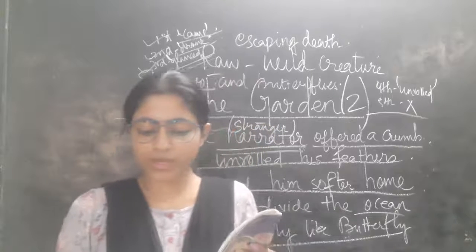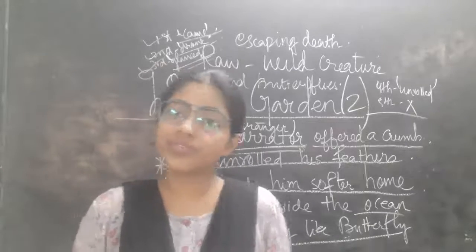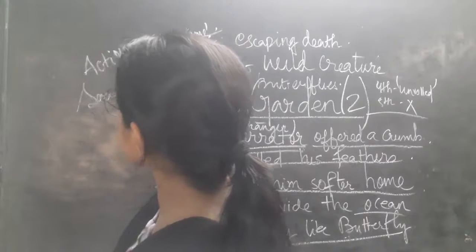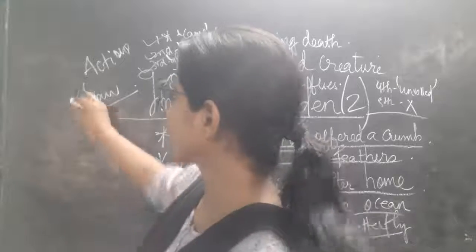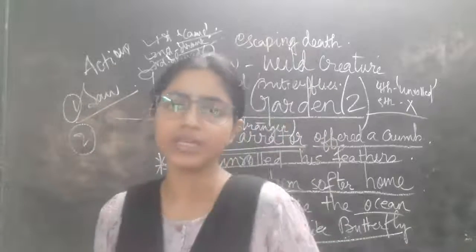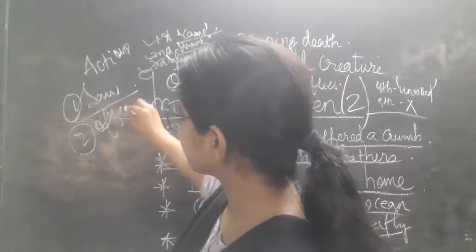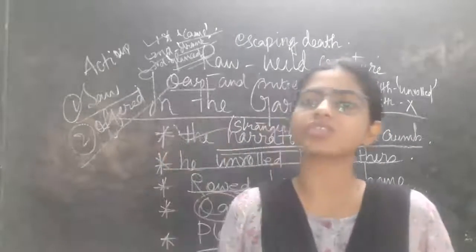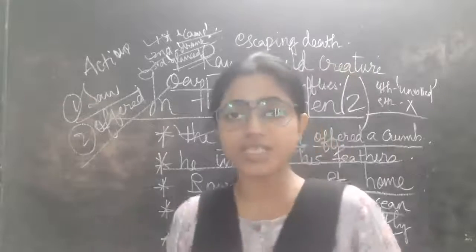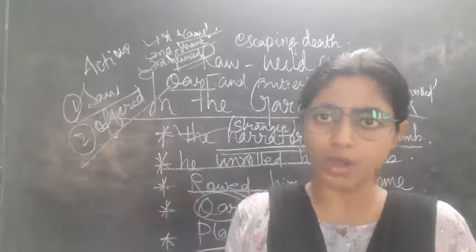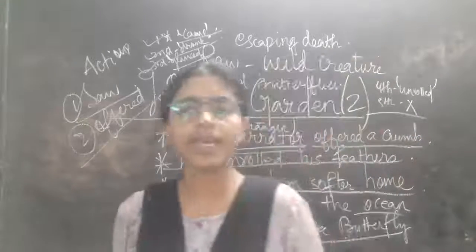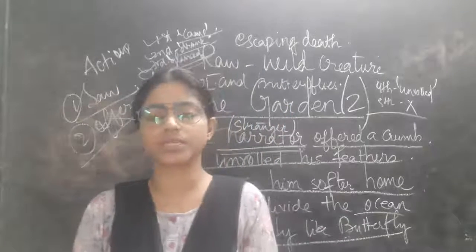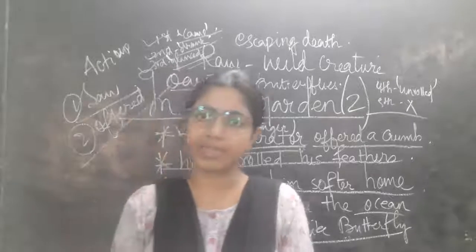Next: what are the two actions of the narrator? The first action is that he saw the bird coming. The second action is that he offered the bird a crumb. So if you are asked to write the two actions of the narrator: first, he saw the bird coming on the walk; second, he offered the bird the crumb. Along with this video, you will get a PDF — please write down all the question answers in your classbook copy and thoroughly read them. Thank you.